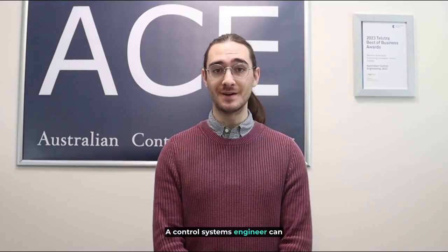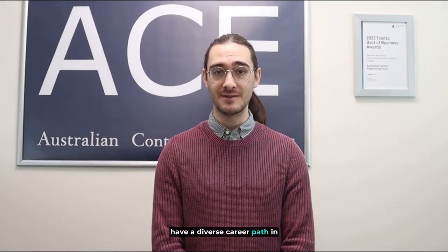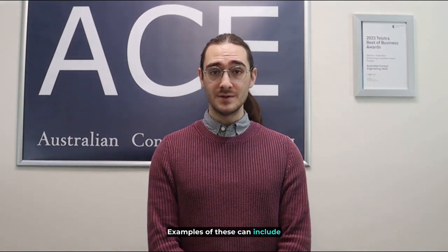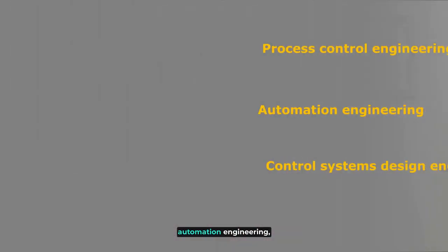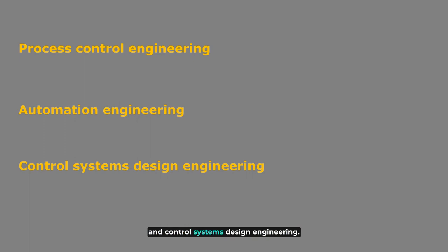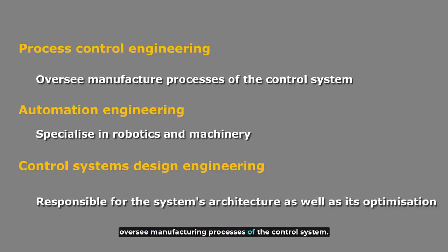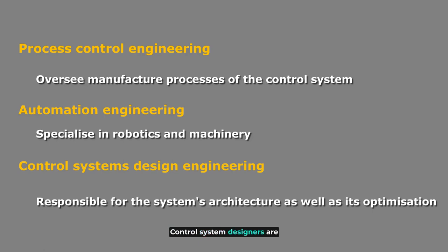A control systems engineer can have a diverse career path. Examples include process control engineering, automation engineering, and control systems design engineering. Process control engineers oversee manufacturing processes, automation engineers specialize in robotics and machinery, and control system designers are responsible for the system's architecture as well as its optimization.